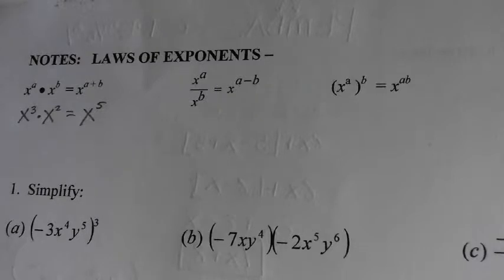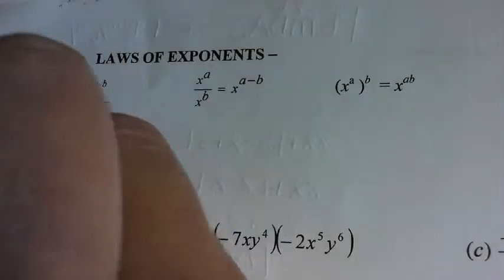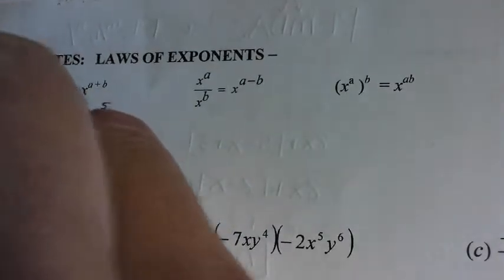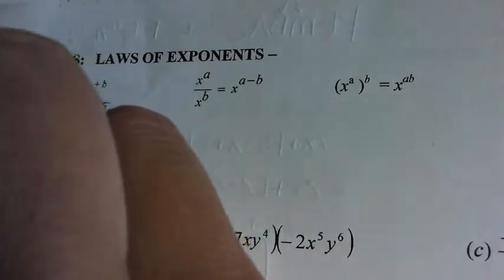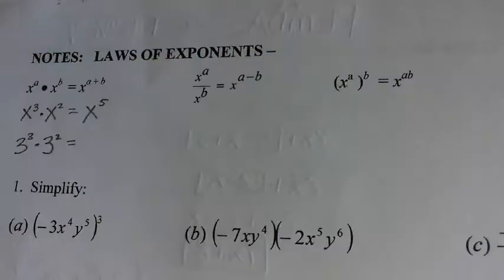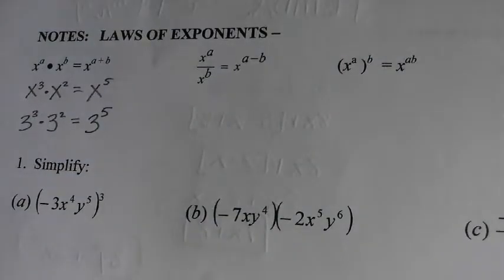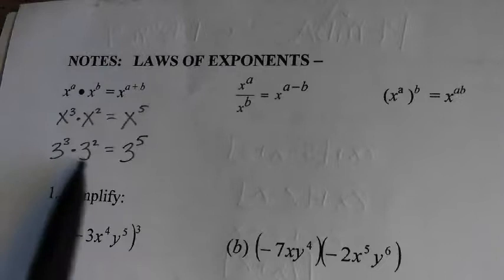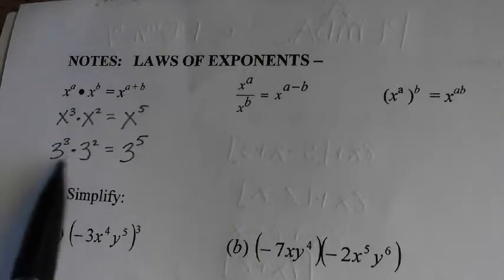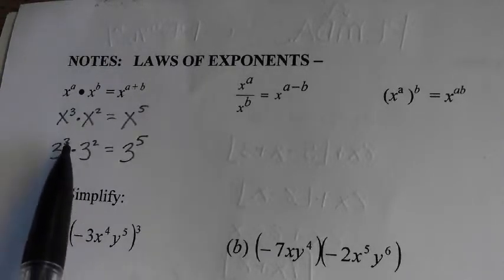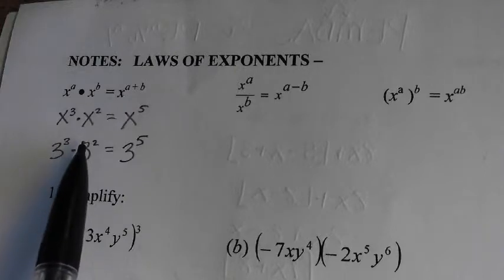What I do notice happens is, if your base is a number, like 3 to the third times 3 to the second, a lot of times kids will write 9 to the fifth, which is incorrect. It is still keep the same base, and really the reason for that is going to come back to PEMDAS. You're not doing multiplication and multiplying 3 times 3 in the same step that you're supposed to be following exponent rules.